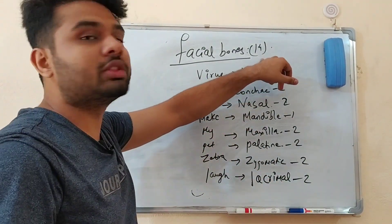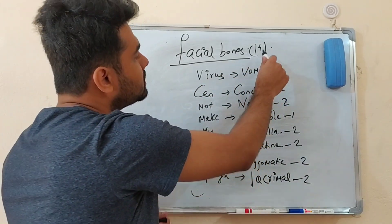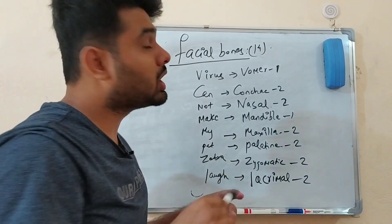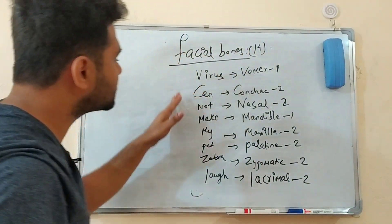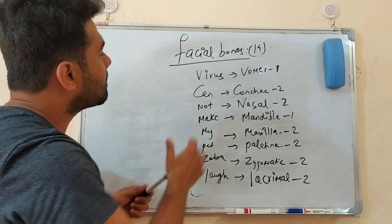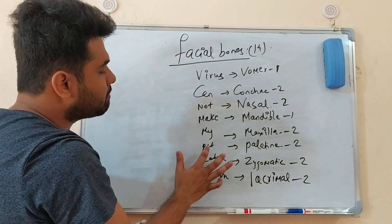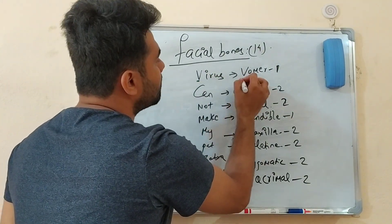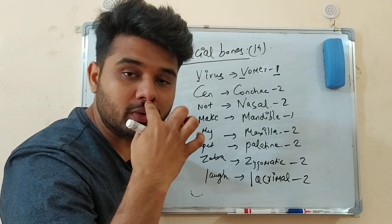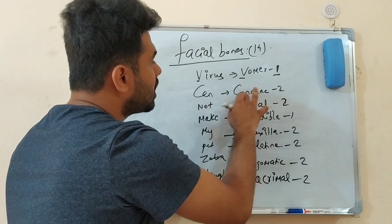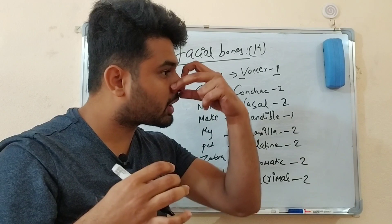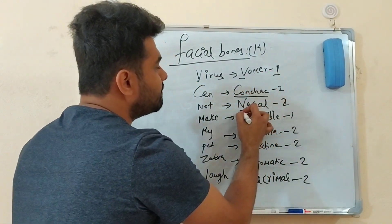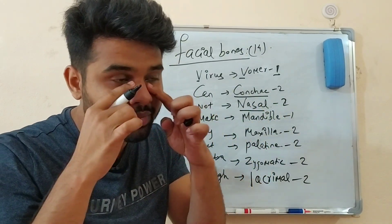The facial bones number 14 — this is an MCQ point. Which bones are present as facial bones? The facial bones have a mnemonic: 'The virus cannot make my pet zebra laugh.' The Vomer bone is one. We have inferior nasal conchae, nasal bones — there are 2 nasal bones.